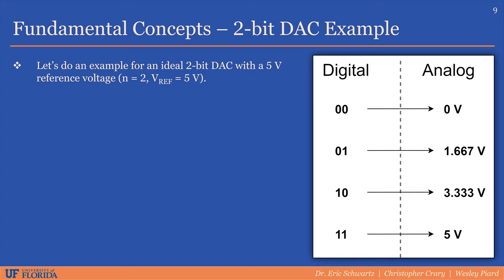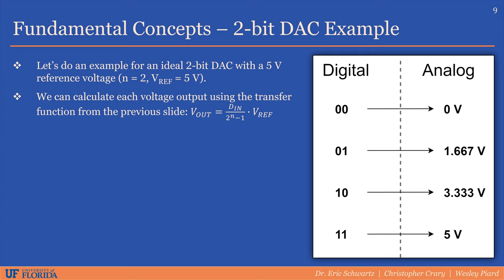To help familiarize these concepts, let's calculate the possible analog output voltages for an ideal 2-bit DAC. Assume the reference voltage is 5 volts. We can use the transfer function introduced in the previous slide to calculate each possible analog value the DAC can output.